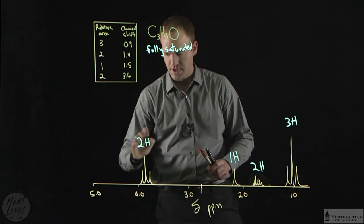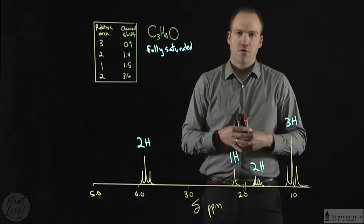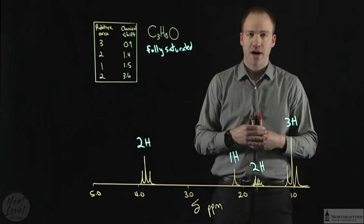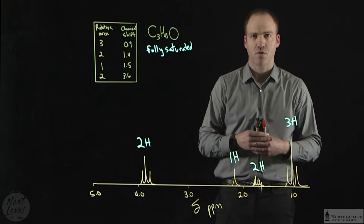Our final piece of information we're going to get from this is splitting. Splitting tells us about the neighborhood that protons are in. Splitting patterns follow what we call the n plus one rule. If you are on a carbon next to another carbon that has no protons, n plus one would be one peak. If you have one neighbor, you'd be split into two peaks or what we call a doublet. If you have two neighbors, you get split into what we call a triplet. If you have three neighbors, you get split into a quartet, and if you have more than three neighbors, we just call it a multiplet.